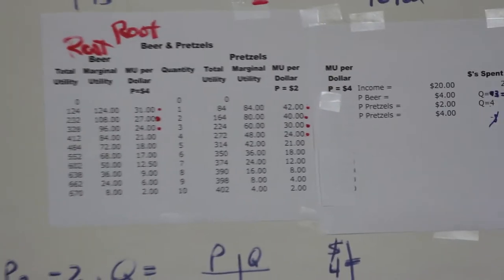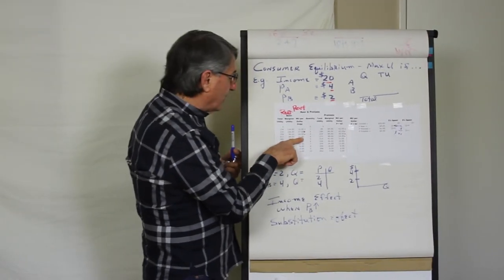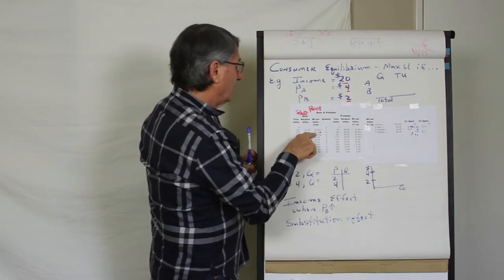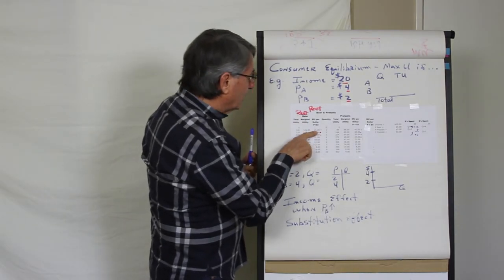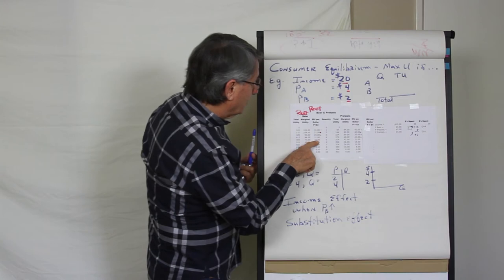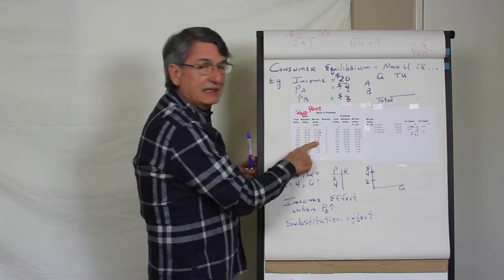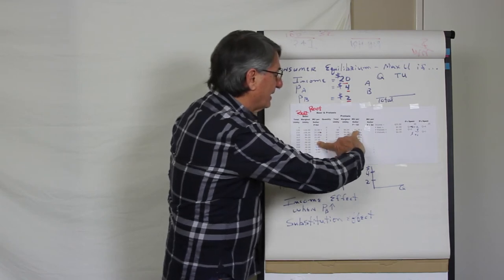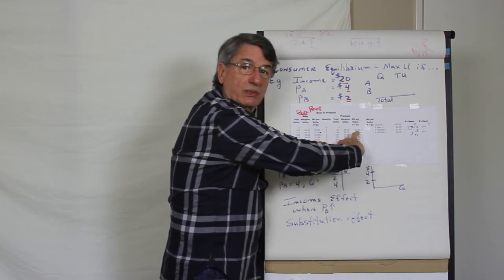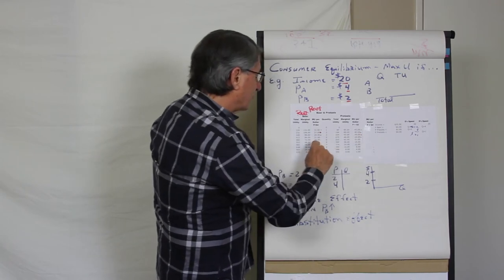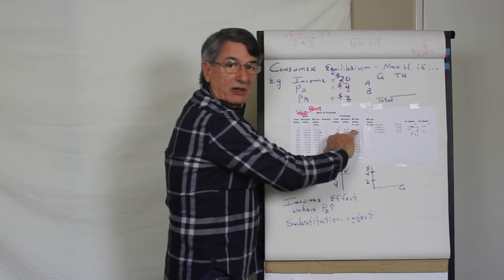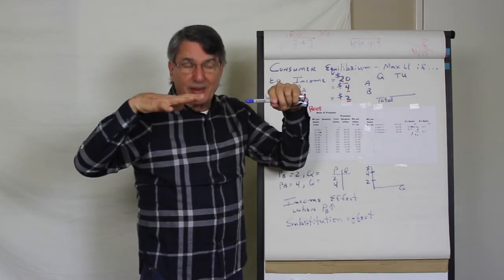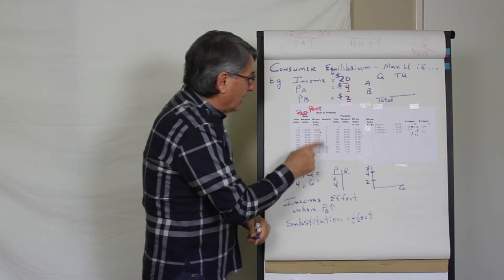You have spent your income of $20, and that's how you've maximized. If you were to buy any other combination — for instance, spending all $20 on beer you could buy 5 units — on the last units purchased you'd be getting 18 utils per dollar, whereas if you'd spent that money on pretzels you'd be getting 42 per dollar. You can make that trade and be better off as long as these ratios are unequal.